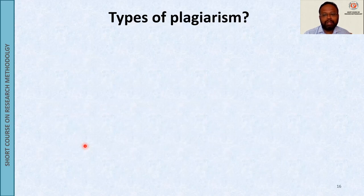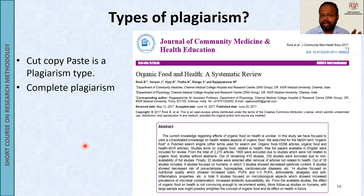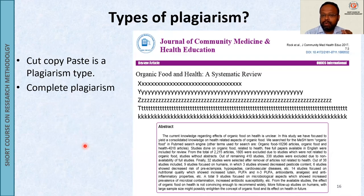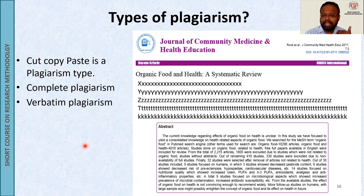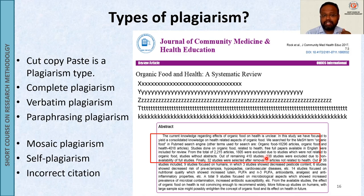What are the types of plagiarism? Many people think cut-copy-paste is the only plagiarism, but there are various types. Complete plagiarism is when you remove the author and institution from an article and prepare a new manuscript with the same content. Verbatim plagiarism is when a single paragraph or group of sentences is plagiarized. Paraphrasing plagiarism is when you change a few words here and there and put it into your manuscript. There is also mosaic plagiarism, self-plagiarism, and incorrect citation.